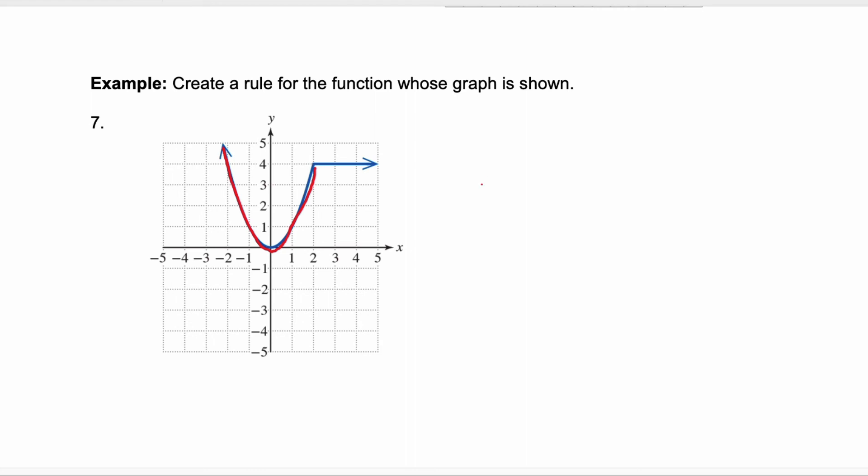So we know if we call this thing f of x we know our first piece is going to be x squared. Now we need to know where, so what are our restrictions on the domain on x? When is it in x squared? Well it's x squared every place that I just colored. So it's to the left of x equals 2. So x less than 2 is going to be that x squared.